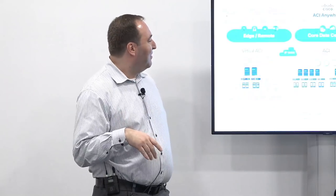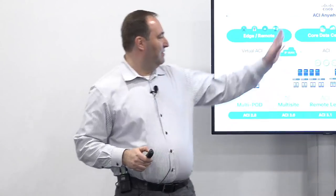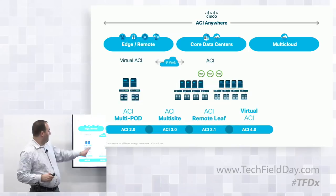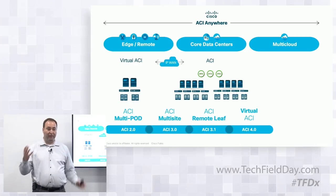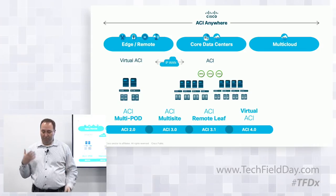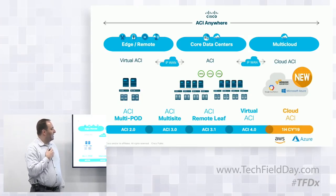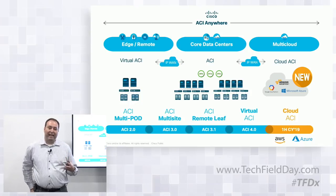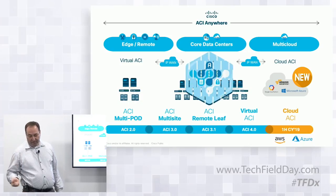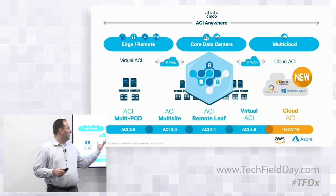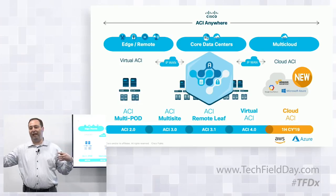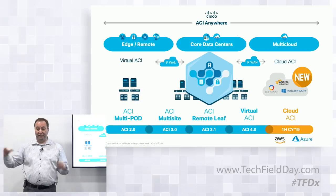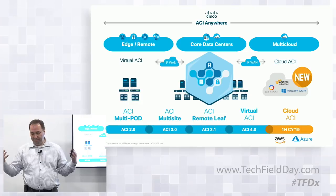So bottom line is we have already covered ACI on-prem: ACI multi-pod, the edge software, the remote leaf, and virtual ACI with VPOD — that's been shipping for a while. What we came to cover today is the new stuff — multi-cloud, really the AWS extension from your on-prem data center. The important thing is that for all of this, MSO is going to be the orchestrator. As you add multi-sites and add the AWS integration, then later Azure and then all the other clouds, MSO will be the orchestrator to support a multi-site environment.